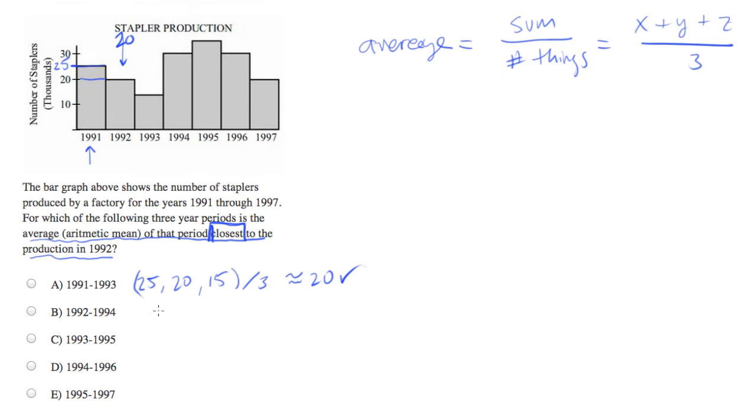In 92 to 94, it looks like we've got 20 for 92, 93 is 15, 94 looks to be about 30. You divide that by three, it's going to be about 22.